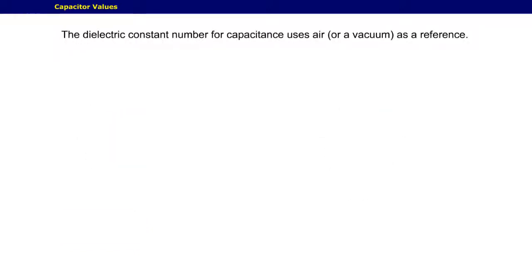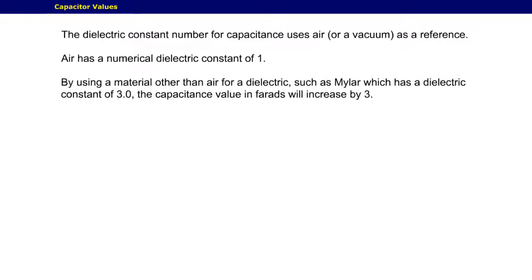The dielectric constant number for capacitance uses air as a reference. Air has a numerical dielectric constant of one. By using a material other than air for a dielectric, such as mylar, which has a dielectric constant of 3.0, the capacitance value in farads will increase by three.